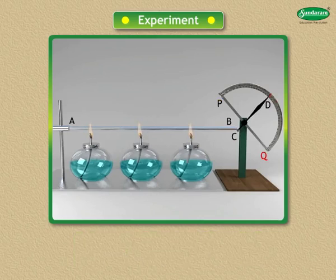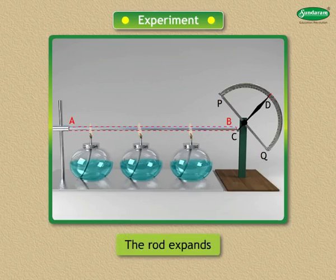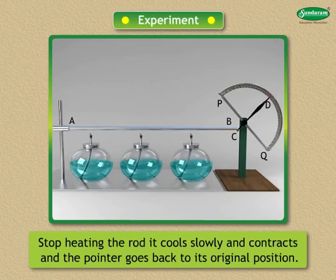The pointer moves on the scale from Q towards P. Why does this happen? When the metal rod AB is heated it expands, that is its length increases. As a result it pushes the lever at end C and the pointer turns towards P. If we stop heating the rod it cools slowly and contracts and the pointer goes back to its original position.